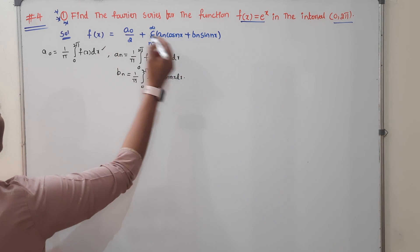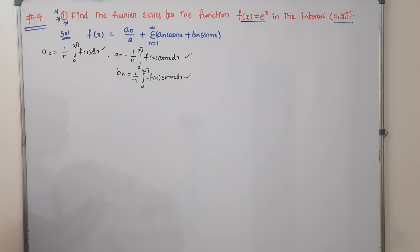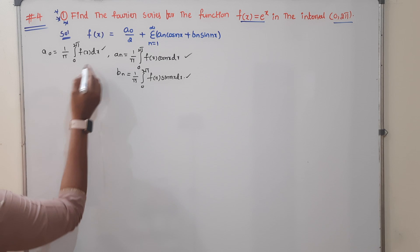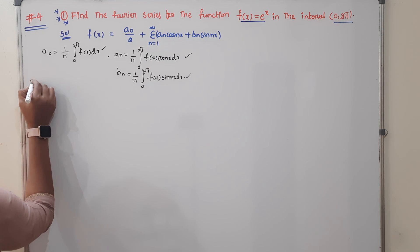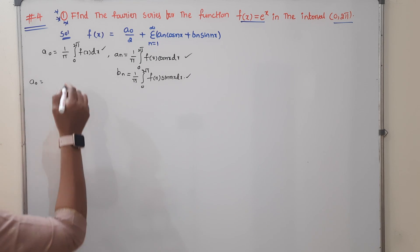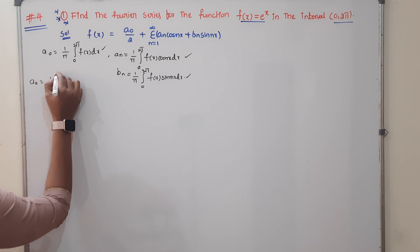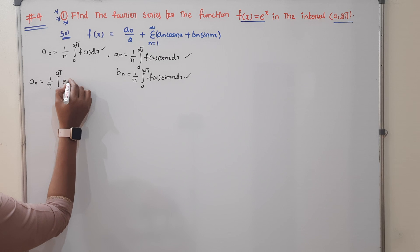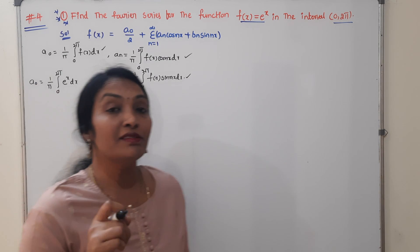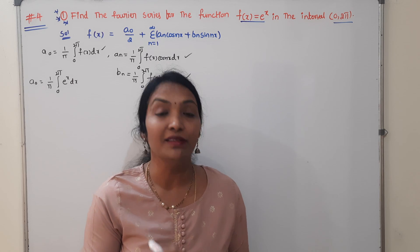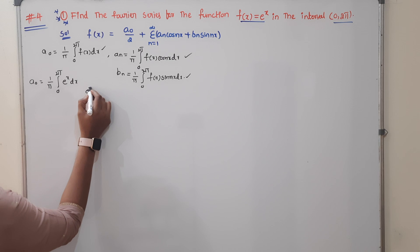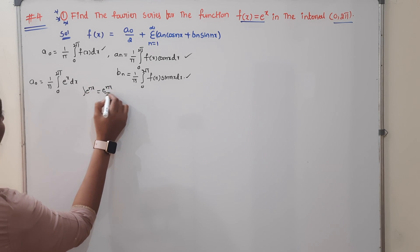I will find out each individual term one by one. For a0, the formula gives us (1/π)·∫ from 0 to 2π of f(x) dx. The given Fourier function here is f(x) = e^x, so we substitute: a0 = (1/π)·∫ from 0 to 2π of e^x dx. The integration of e^x is e^x itself.